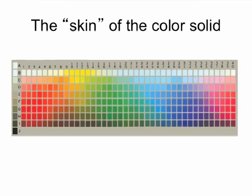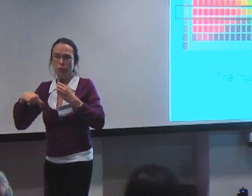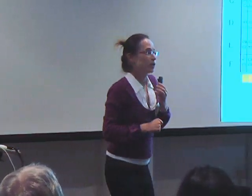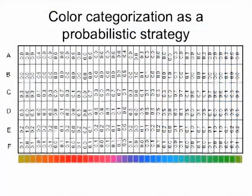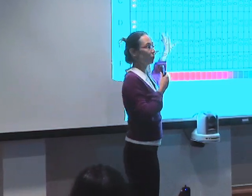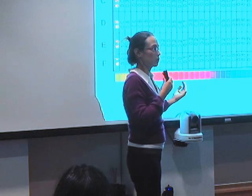Let's look at the skin of the color solid again. I simplify the model as much as possible by taking the hue circle — that's the equator of the globe. I define color categorization as a matrix on this simple circular color space. This matrix tells me the probability that I'll call a given color one of these words — red, orange, yellow, green, blue, purple. They add up to one, and each artificial agent in the simulations is equipped with such a matrix as its color categorization.